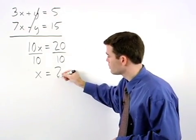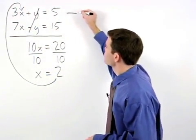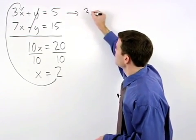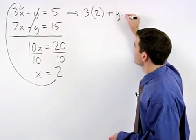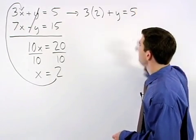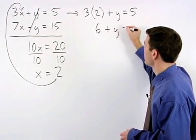If we plug a 2 back in for x, that gives us 3 times 2 plus y equals 5. This simplifies to 6 plus y equals 5.